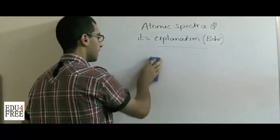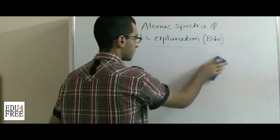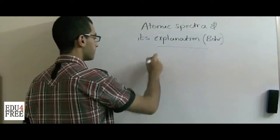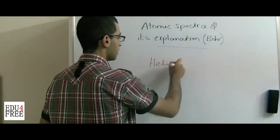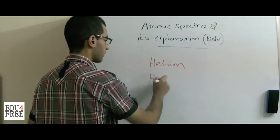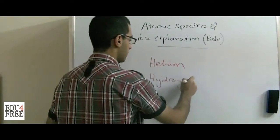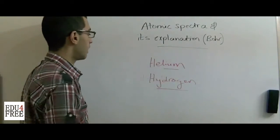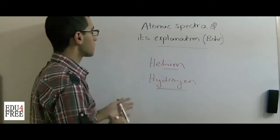So when the sunlight was examined under the spectroscope, it was discovered that helium and hydrogen are the main constituents of the sun.